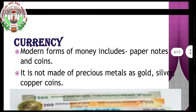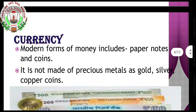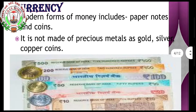Now let us see what is currency. Modern forms of money include paper notes and coins. Currencies of different countries have different names — what we call money in different places is known as currency, and they call it by different names. So modern forms of money include paper notes and coins.